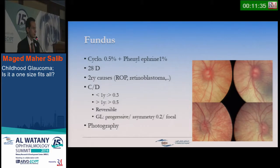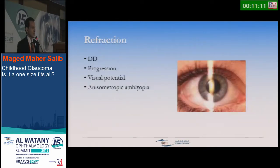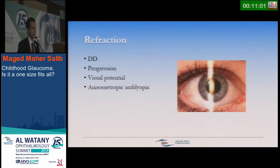Fundus examination is done with diluted cyclopentolate and phenylephrine to check for secondary causes and assess the cup-disc ratio, which differs somewhat from adult nomograms. More importantly, as in adults, we monitor for progression, asymmetry between the two eyes, and focal defects, and it is very important to photograph at each visit. Some centers do not have intraoperative axial length measurement, so we can check with refraction — progressive myopia beyond norms is suggestive of progressive glaucoma. We also assess visual potential and treat anisometropic amblyopia which can occur.